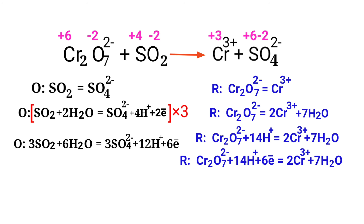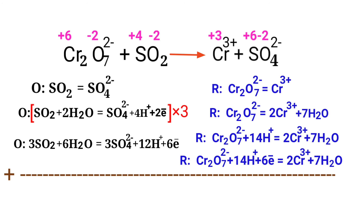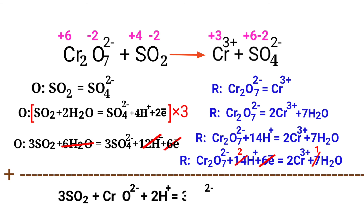Now add both half-reactions together and cancel the same terms on each side. The equation is now balanced in an acidic medium.